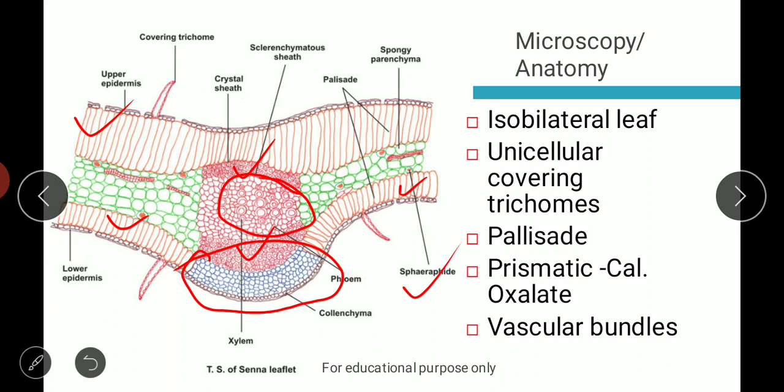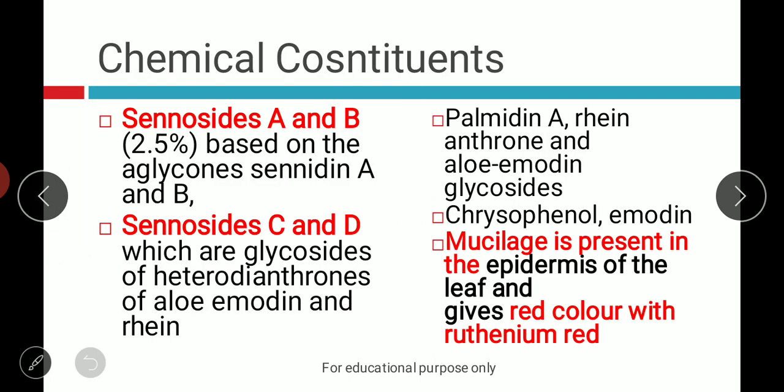If you have any doubts you can comment and I will answer your queries. Next, the chemical constituents — there are four major chemical constituents: sennoside A, sennoside B, sennoside C, and sennoside D. Based on the aglycone of sennosides, that is sennidin A and B, they are A and B sennosides. Heterodianthrone, that is aloe-emodin and rhein, can be obtained after hydrolysis of C and D sennosides. It also contains palmidin A, rhein anthrone, and aloe-emodin.